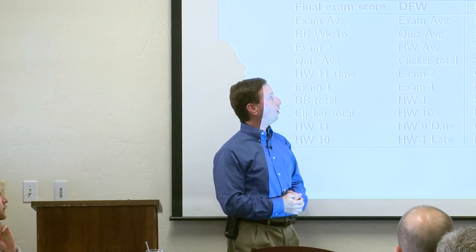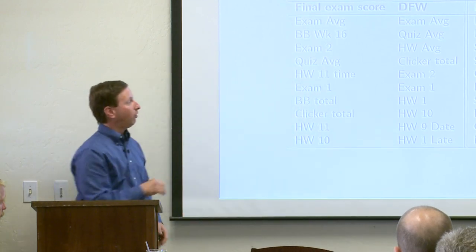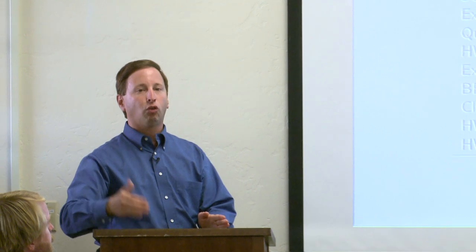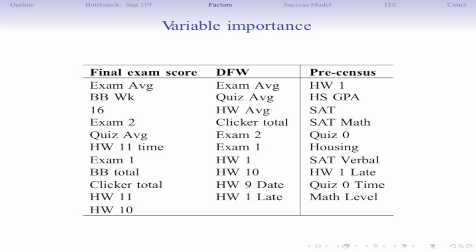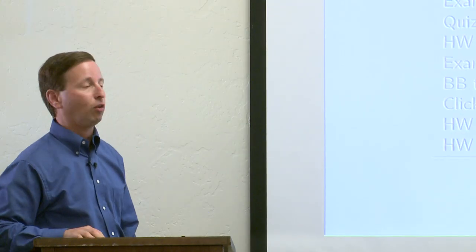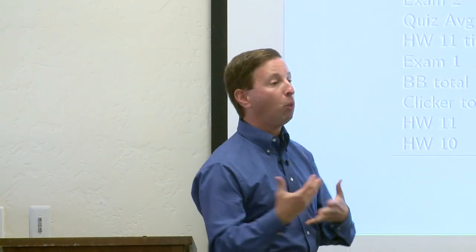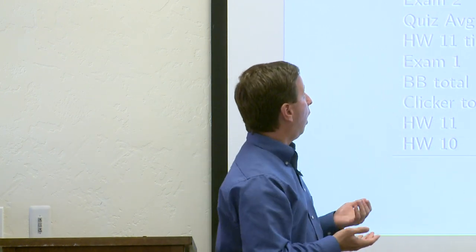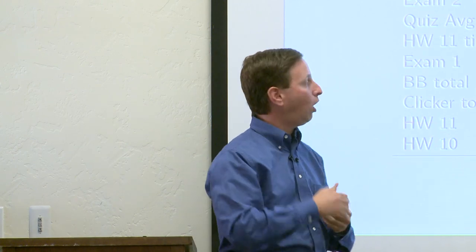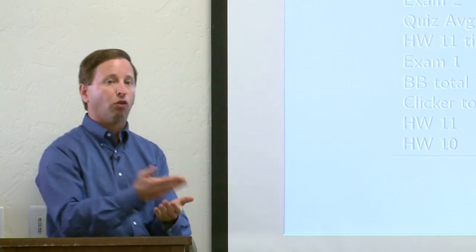For the rest of the time I'll talk about identifying early on students at risk of performing poorly — using pre-census data. Based on pre-census data, not surprisingly, homework one was the most important. Otherwise, it's educational preparation: high school GPA, SAT scores, and that quiz zero algebra assessment. The only notable finding was that living in a dorm mattered, consistent with findings showing dorm residents have a higher chance of success.